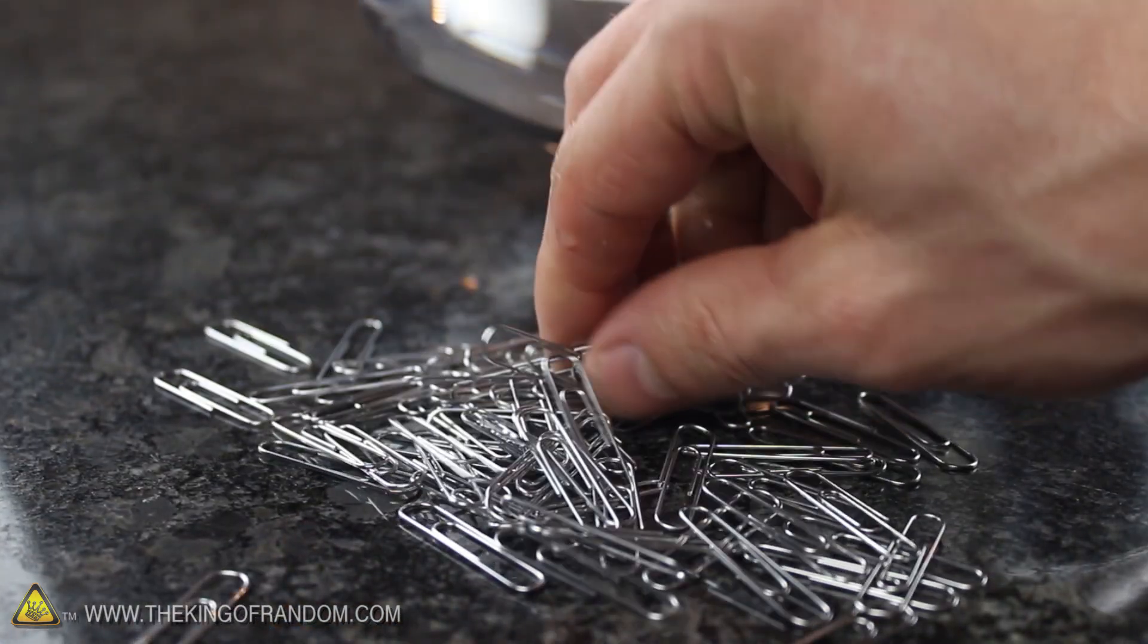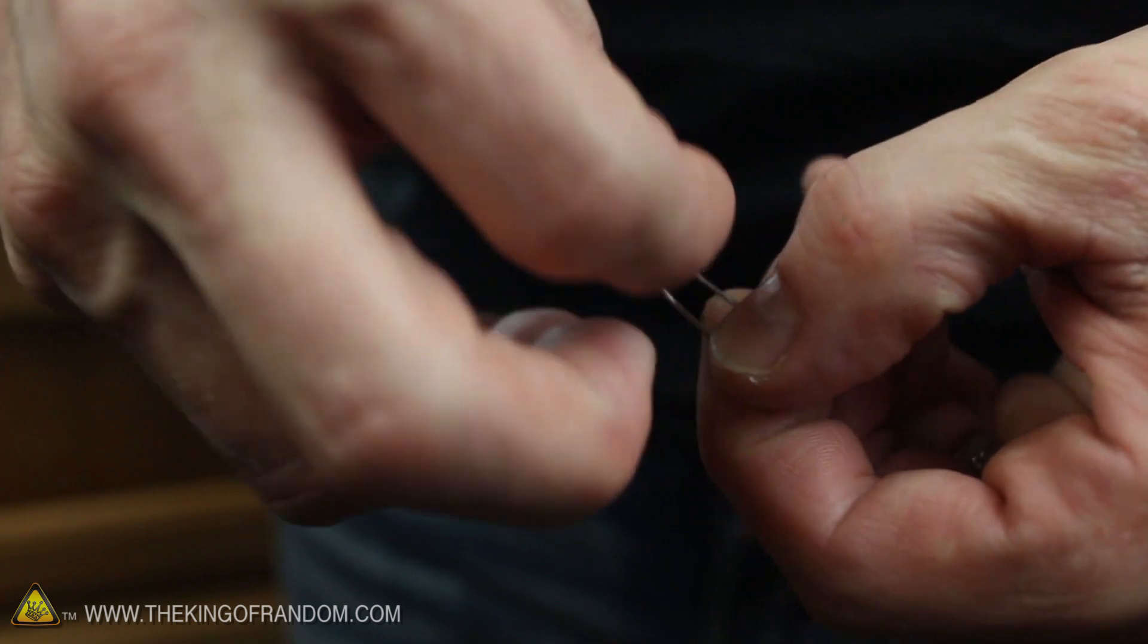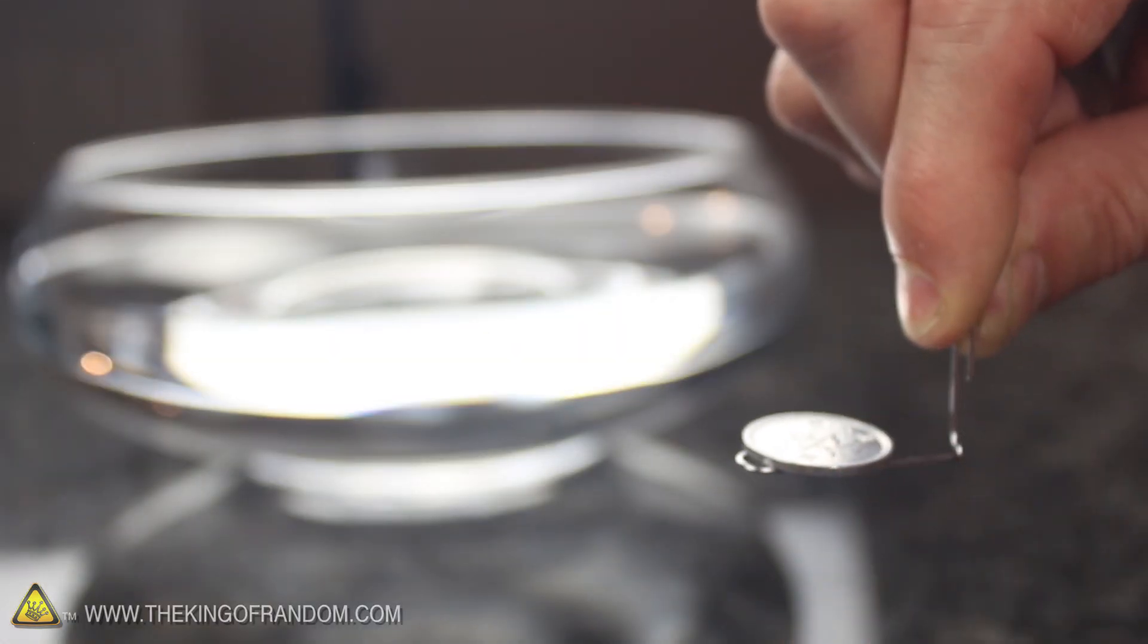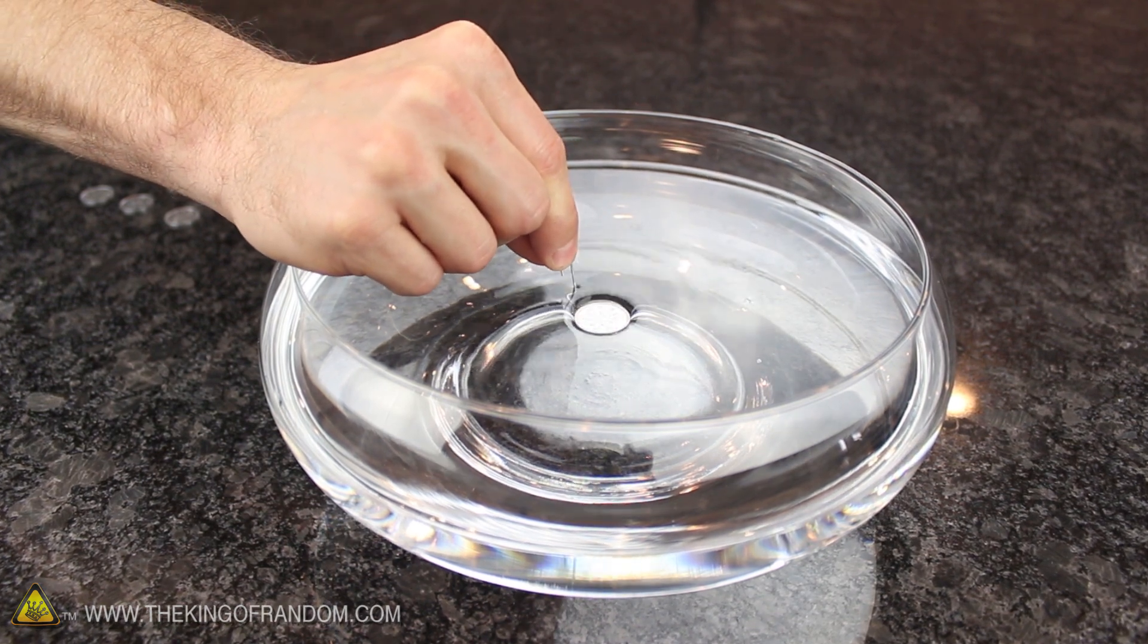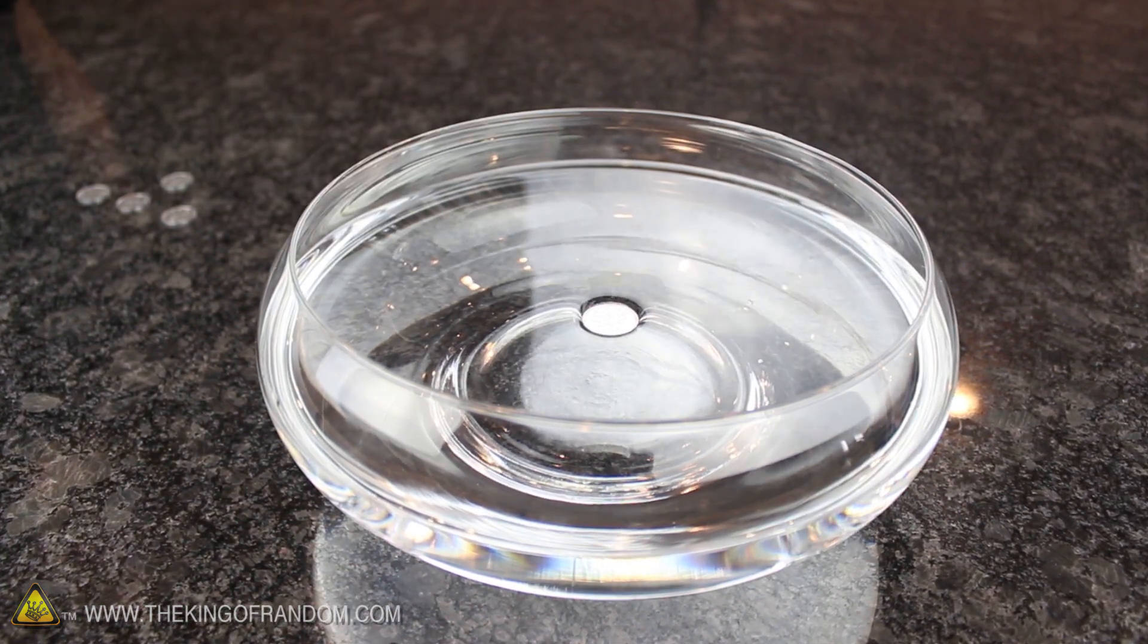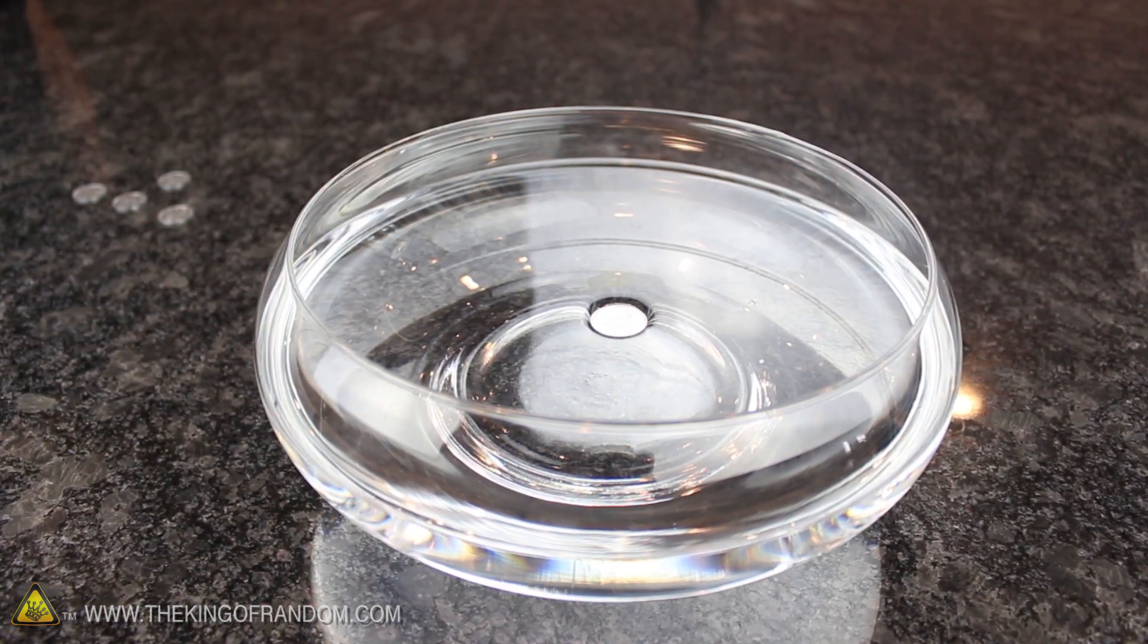But to change all that, you just need one small paper clip. Simply unfold the clip by bending the inner part back until it makes an L shape, then balance one of the coins on the larger end, and use the other side as a handle to slowly dip the coin into the water. Now pull the clip back out of the water, and amazingly, the coin will be left floating on top, almost like magic.